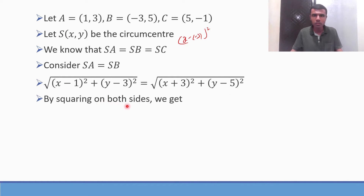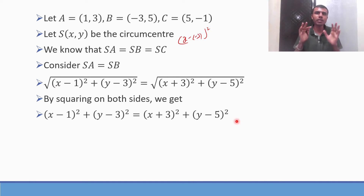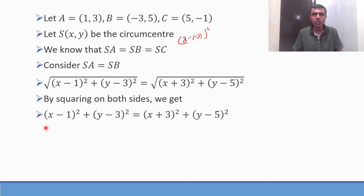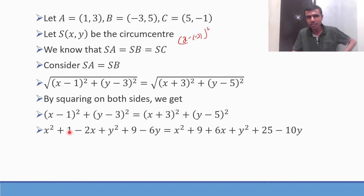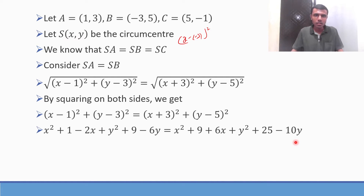Squaring both sides we get: (X minus 1) whole square plus (Y minus 3) whole square = (X plus 3) whole square plus (Y minus 5) whole square. Using a minus b whole square = a squared + b squared minus 2ab: X squared + 1 minus 2X plus Y squared + 9 minus 6Y = X squared + 9 + 6X plus Y squared + 25 minus 10Y.